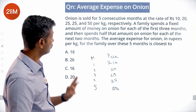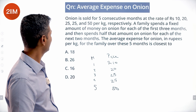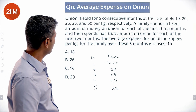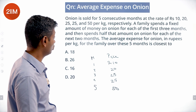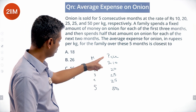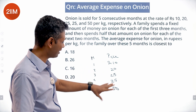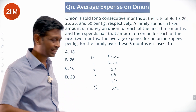A family spends a fixed amount of money on onion for each of the first three months, then spends half that amount on onion for each of the next two months. Same amount for three months, then half that amount for two months.